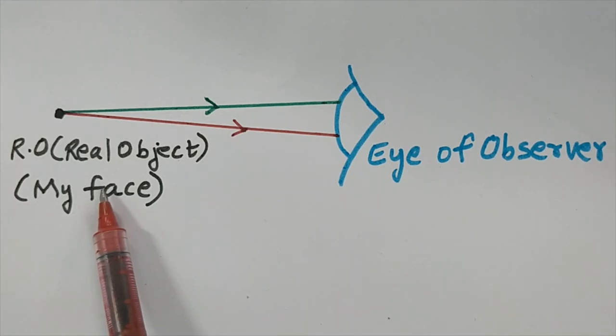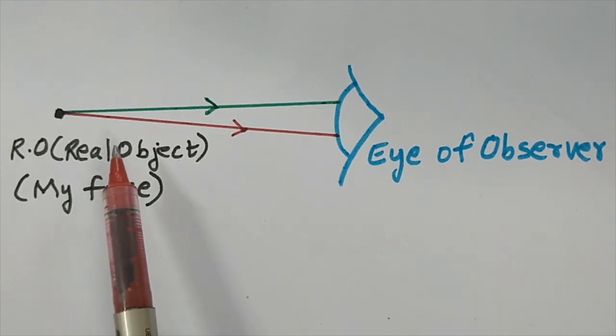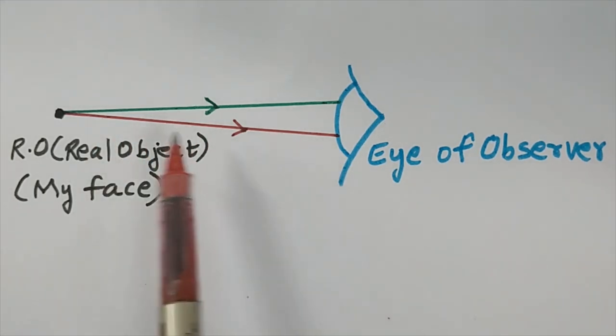Who is talking to you right now — the real me or the virtual me? You are actually watching my virtual image talking to you now. When you see the real me, light rays directly enter your eyes after reflecting from my face. But now you are seeing my virtual image, which appears to be standing the same distance behind the mirror as I am standing in front of it.